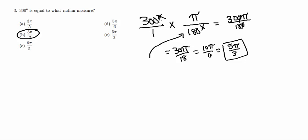So you're basically just starting with this 300 degrees and multiplying it by 1, but not just 1. You're multiplying it by pi over 180 degrees to convert it to radians. So that is called your conversion factor.